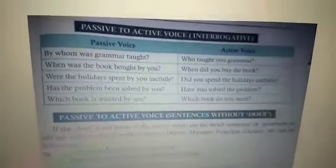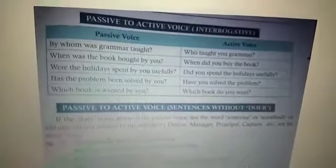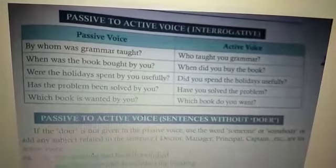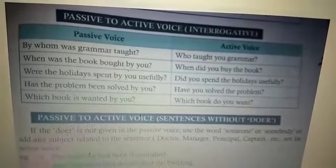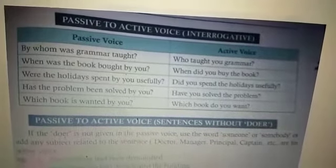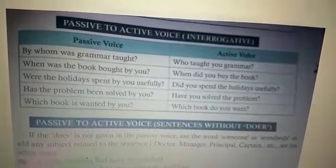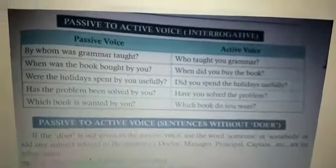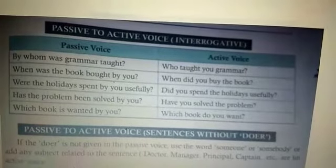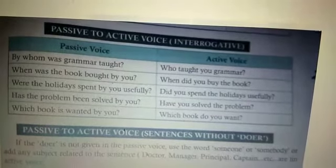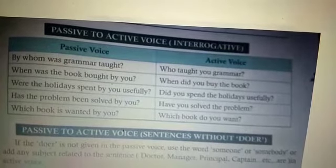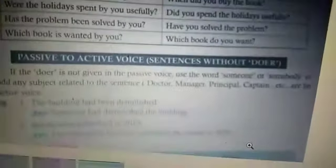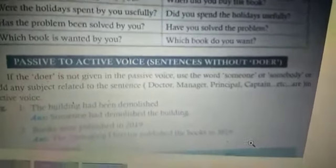For interrogative sentences: Passive 'By whom was grammar taught?' → active 'Who taught you grammar?' Passive 'When was the book bought by you?' → active 'When did you buy the book?' Passive 'Were the holidays spent by you usefully?' → active 'Did you spend the holidays usefully?' Passive 'Has the problem been solved by you?' → active 'Have you solved the problem?' Passive 'Which book is wanted by you?' → active 'Which book do you want?'